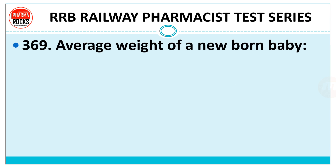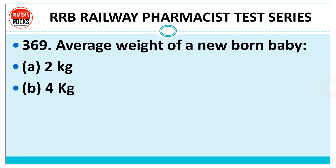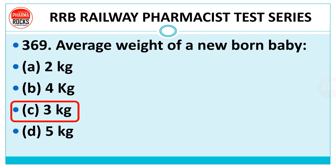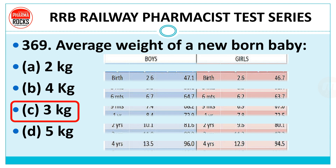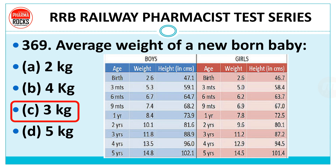Question 369: Average weight of a newborn baby — 2 kg, 4 kg, 3 kg, or 5 kg? Right answer is 3 kg. The normal weight at birth for both boys and girls is around 2.6 kg, with heights of 47.1 cm and 46.7 cm respectively. The nearest option value is 3 kg, so we select Option C.